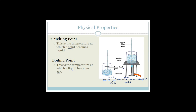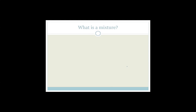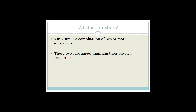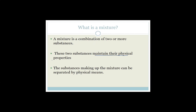Those are all the physical properties you need to know. We'll talk about chemical properties later when we talk about reactions. Now let's move on to a new part about matter and material — let's talk about mixtures. A mixture is a combination of two or more substances. They maintain their physical properties and don't change whatsoever. The substances making up the mixture can be separated by physical means.